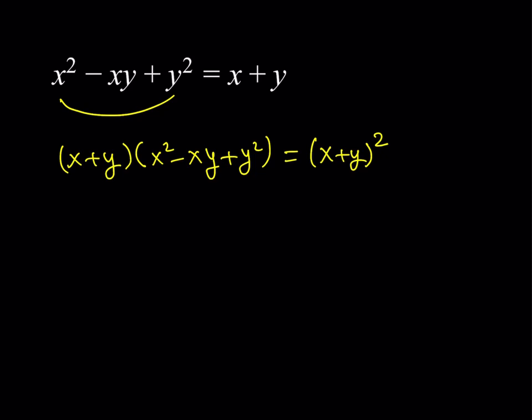The left-hand side is going to simplify because we said something about sum of two cubes — this is exactly x cubed plus y cubed. So we have x cubed plus y cubed, which is equal to x plus y quantity squared.